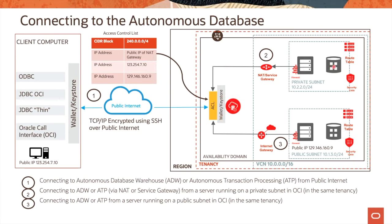For connections to the autonomous database from a compute instance running on a public subnet of Oracle Cloud Infrastructure, you take the public IP and add it to the access control list. For access over the public internet from a computer running on-premises, you grab the public IP and add it to the access control list as well. Once the access control list is populated, if a user tries to access the autonomous database, the service looks at the list and determines whether the connection is valid. If the IP address is not in the list, the connection gets rejected.